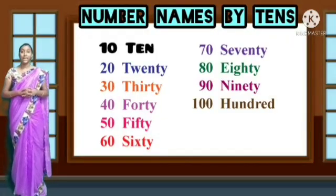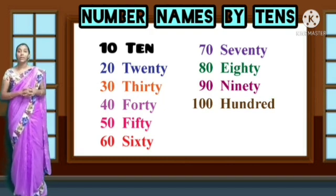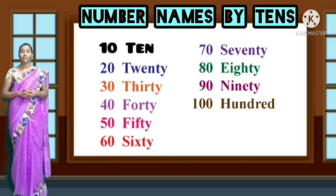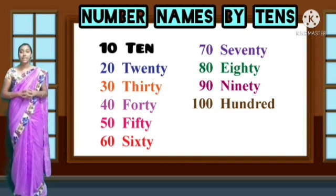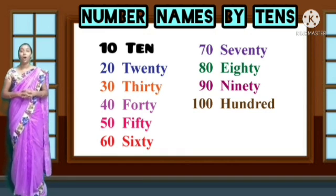Now the next topic is number names by tens. Look at the number names here. The first one is 10 — one, zero, ten. T-E-N, ten. One, zero, ten.